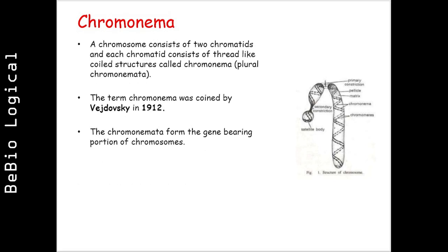A chromosome consists of two chromatids, and each chromatid consists of thread-like coil structures called chromonema, or in plural, chromonemata. The term chromonema was coined by Vejdovsky in 1912. The chromonemata form the gene-bearing portion of chromosomes.